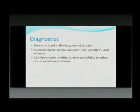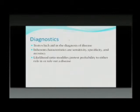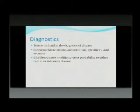We're talking about diagnostics — tests which aid in the diagnosis of disease. These tests have inherent characteristics such as sensitivity, specificity, and accuracy. Each test has a likelihood ratio, and this modifies the pre-test probability of the probability of a disease, so it helps us rule in or rule out disease.